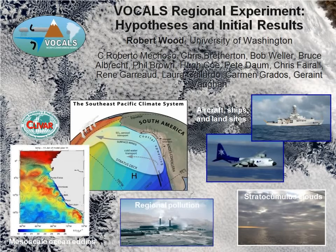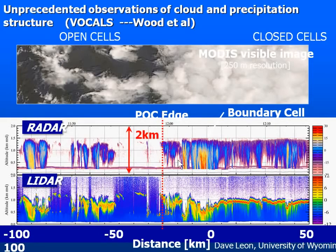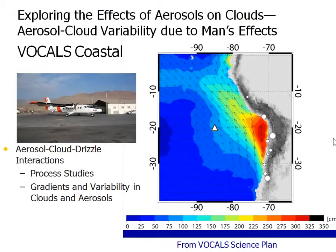You may have heard Rob's talk yesterday. One of the things they were looking at were these pox areas. They found — here showing the same open cells, closed cells — with the Wyoming King Air radar showing the difference in the characteristics of the clouds in these different areas. They were also able to find very large differences in aerosol concentrations with some ultra-clean, very clean air along some of these edges of the clouds. I would point you to the paper Rob presented yesterday, also in the Atmospheric Chemistry and Physics journal.